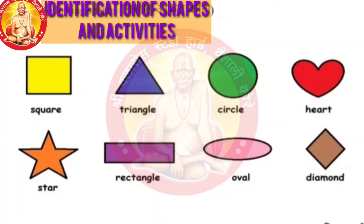R-E-C-T-A-N-G-L-E, Rectangle means Ayat. O-V-A-L, Oval means Unda Kruti. D-I-A-M-O-N-D, Diamond means Hirya Cha Akar. So write down all the spellings.